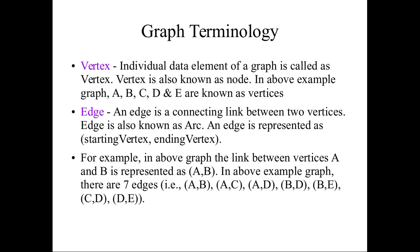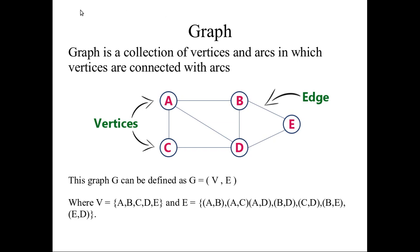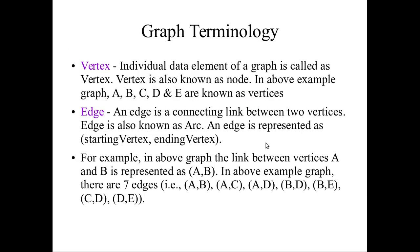Edge is a connection between two vertices. So in the above example, we have 1, 2, 3, 4, 5, 6, 7—we have seven edges. You can tell it is representing from starting node to ending node. The link between vertex A and vertex B is represented as A comma B. Similarly, you have seven edges as mentioned here.